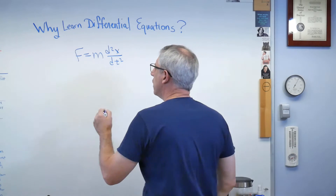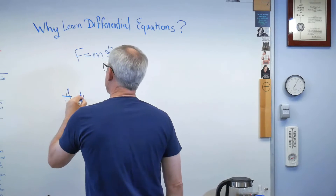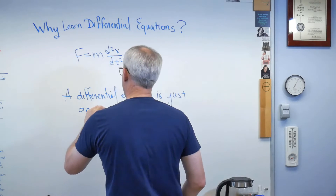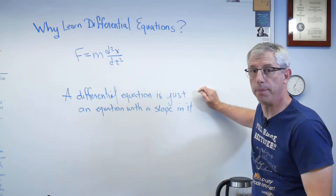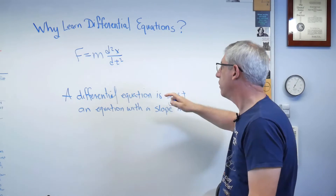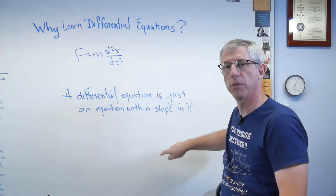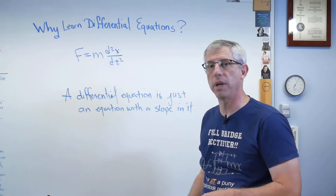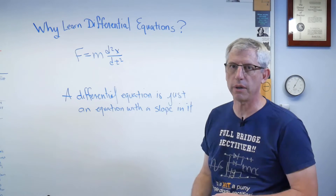Let's pause. What is a differential equation? That's what a differential equation is. Turns out there's also something called an integral equation, which is just an equation that has an integral in it. But this right here is what a differential equation is. In order for the equation to have a slope in it, it means the answer has to be a function, not a number. Numbers don't have slopes. Functions have slopes.